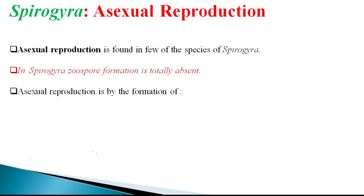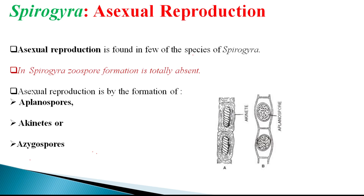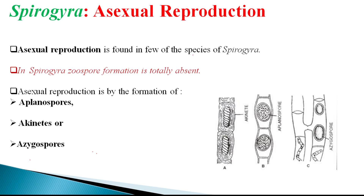Till recently, only a few species have been recorded for this asexual mode of reproduction. Asexual reproduction in Spirogyra takes place by means of formation of planospores, urchinates, and azygospores — which are sometimes also called parthenospores. These are the main ways by which asexual reproduction takes place.